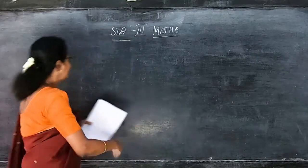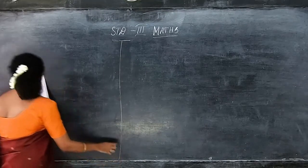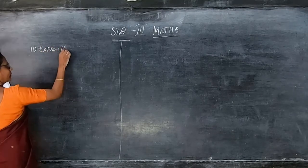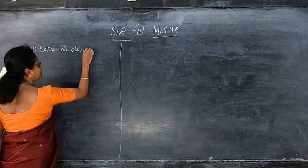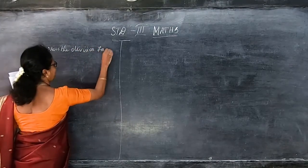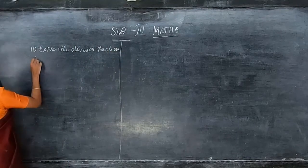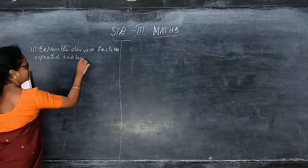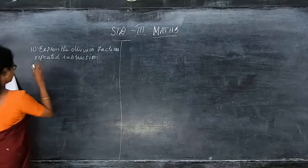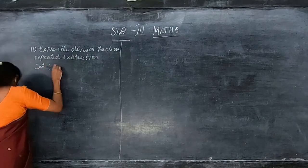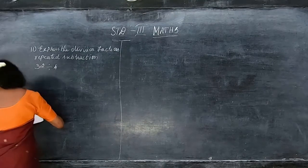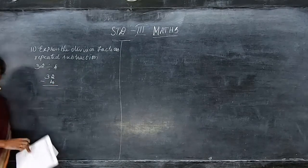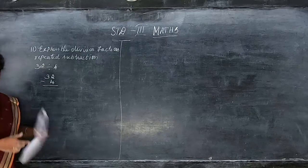Now this one is: express the division facts as repeated subtraction. So you can see how to repeat this one and do it easily. So how to do this: 32 minus 4. This is the way of doing repeated subtraction.